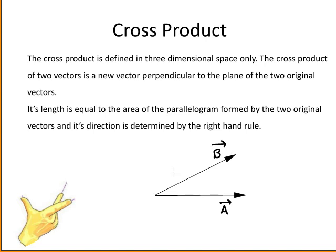Here is the vector A and the vector B and these both lie in this plane indicated by the green lines. The cross product of vector A with B is a new vector which is perpendicular to this plane. This is the cross product of vector A with vector B.